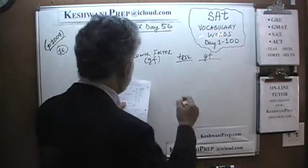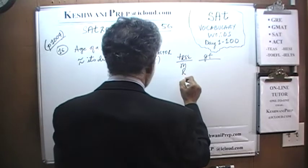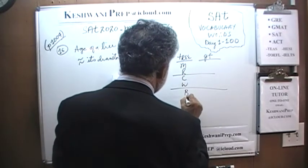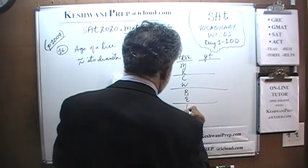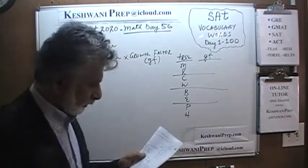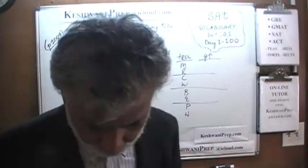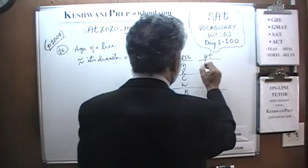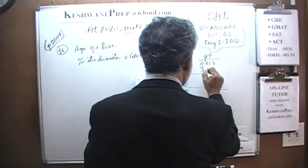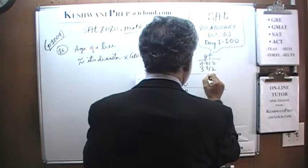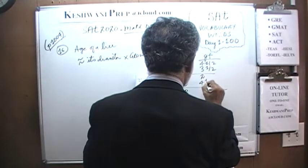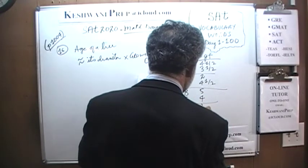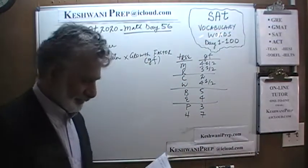I don't know exactly what all the tree abbreviations stand for — you can look them up in the book. The letters are M, R, C, W, B, E, P, and H. And here are the growth factors: four and a half, three and a half, two, four and a half, five, four, three, and seven. So that is the setup.